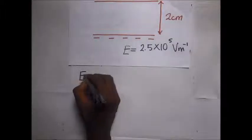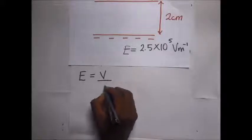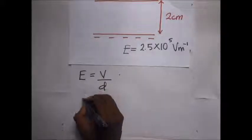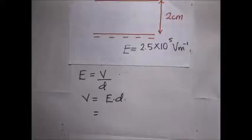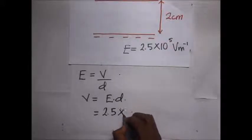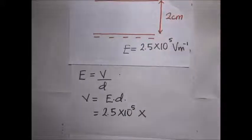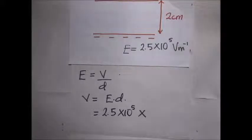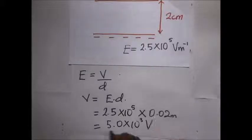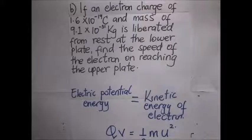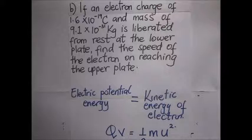We know that the intensity E is equal to the potential difference V over D, so to find the potential difference: V = E × D. Our intensity is 2.5×10⁵, multiplied by the plate separation of 2 centimeters, which we convert to meters giving 0.02 meters. Our potential difference between the plates is therefore 5.0×10³ volts.